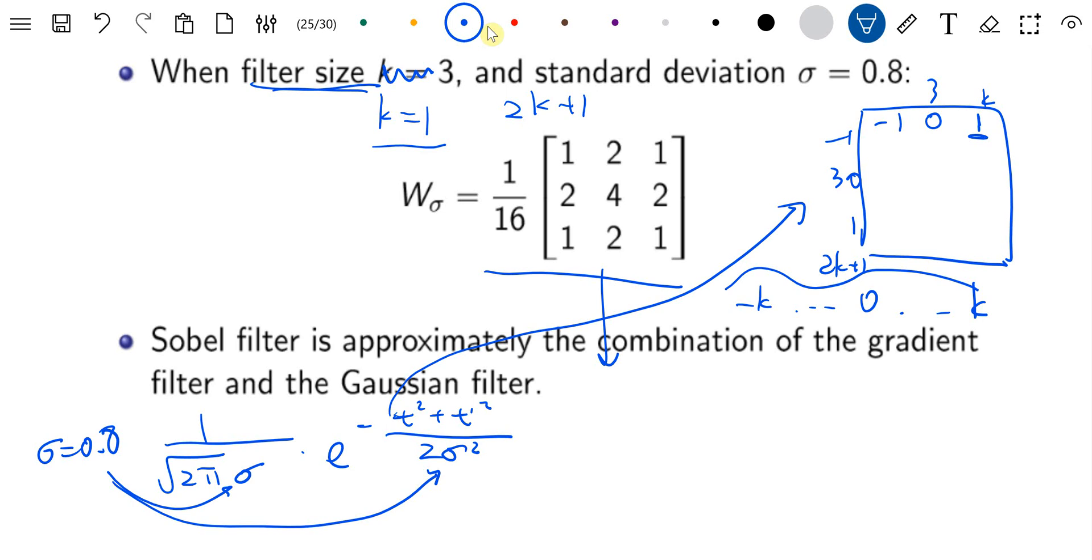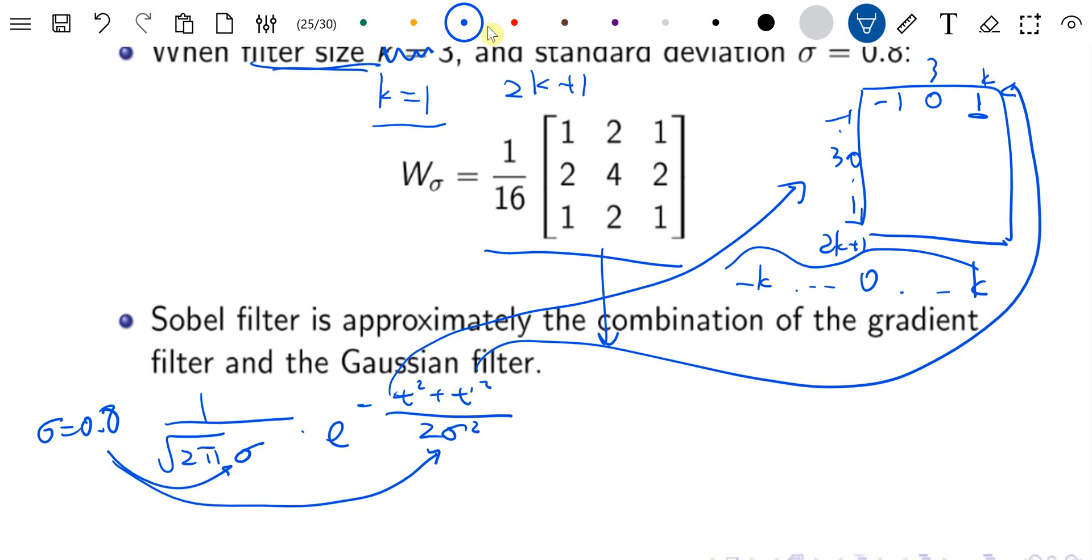Here t will be minus 1, 0, 1, and t prime will be the column number minus 1, 0, 1. We can figure out each entry by substituting numbers. For example, for this entry, t is minus 1, t prime is minus 1. For this entry, t is minus 1, t prime is 0. Similarly, t is minus 1, t prime is 1.